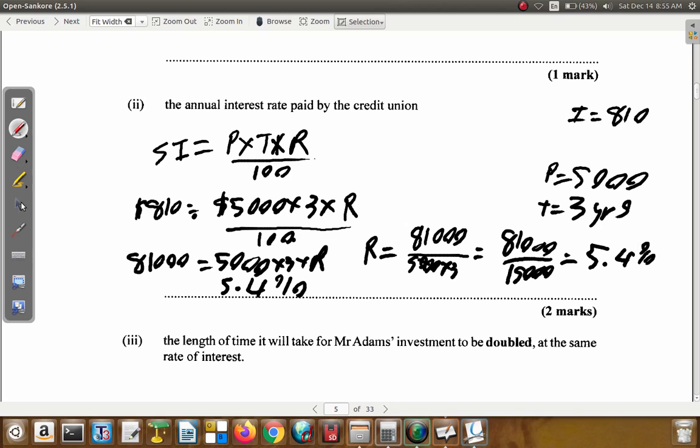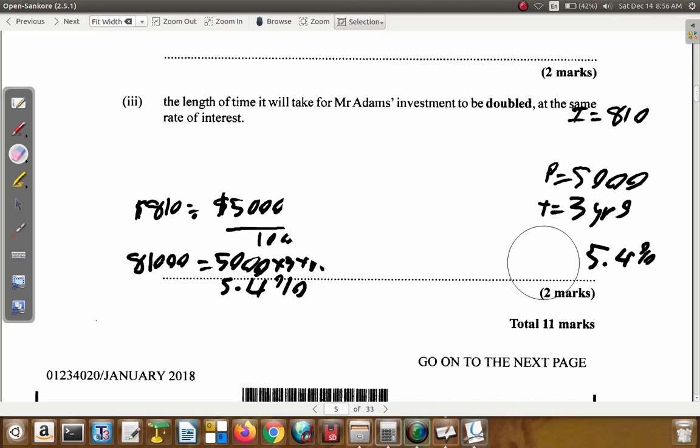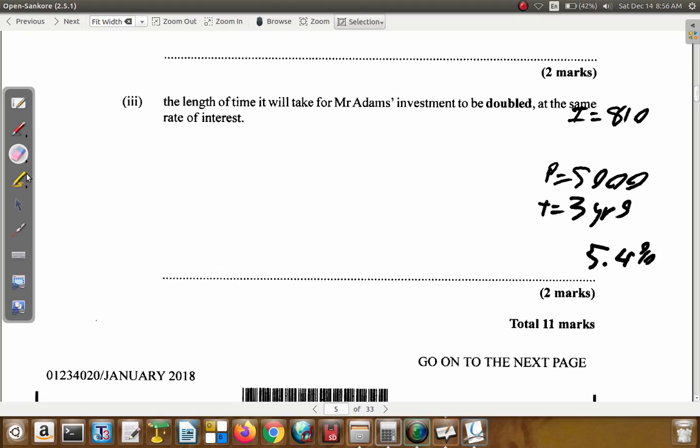Now, the other question: what is the length of time it will take Mr. Adams' investment to be doubled at the same rate of interest? What we have is a doubling of the investment. He puts in $5,000 and he will get out $10,000. Therefore, the interest that he will earn is $5,000.